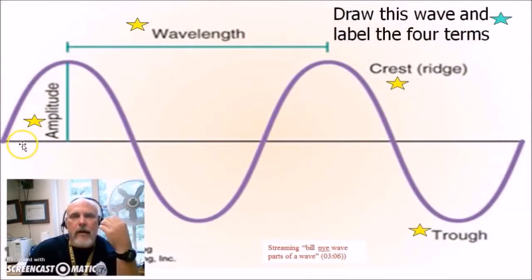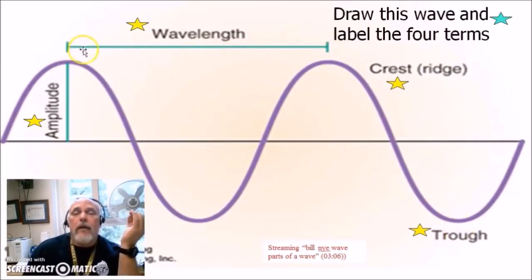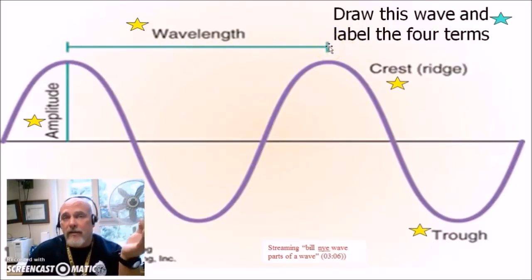This is something I would like you to draw. Just do a rough sketch of this wave, and you should be able to identify the four different parts. So you should be able to identify the crest, the trough, a wavelength, and amplitude. Those four parts of the wave you should be able to identify. You should have a basic knowledge that as you increase the wavelength, you're going to make the sound deeper. And as you increase the amplitude, you're going to make the sound louder.